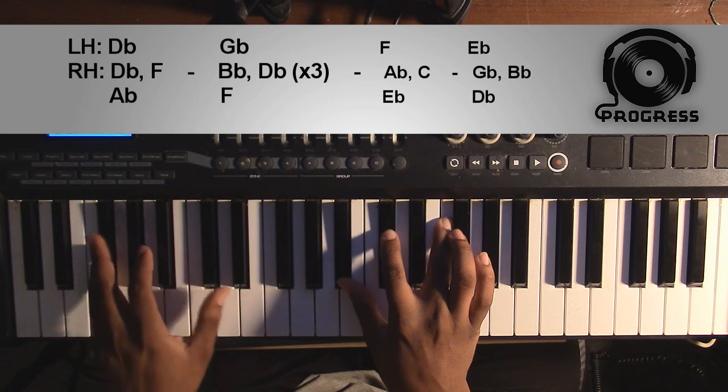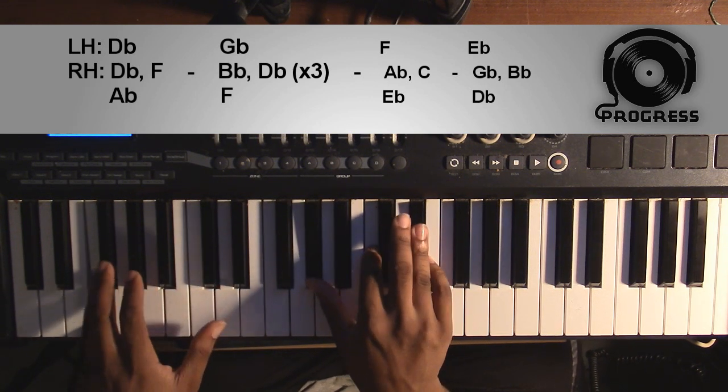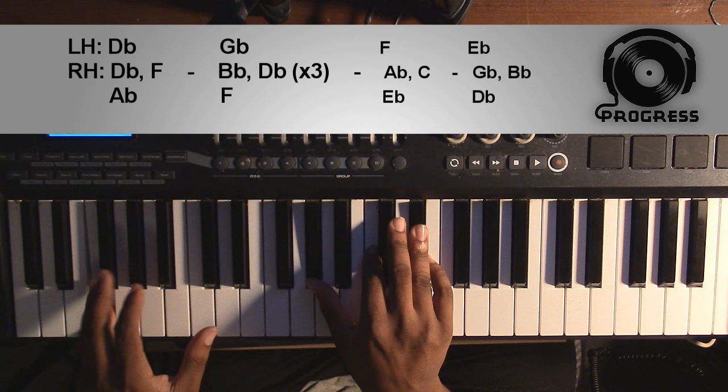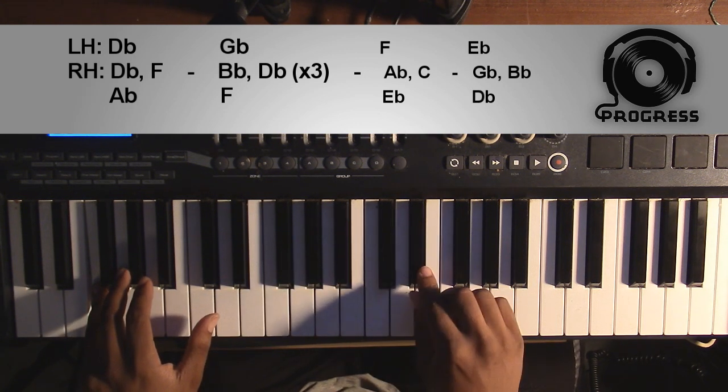And from here it's going to go to an F-minor 7 chord. Left hand you're going to have an F, right hand you'll have an A-flat, a C, and an E-flat.